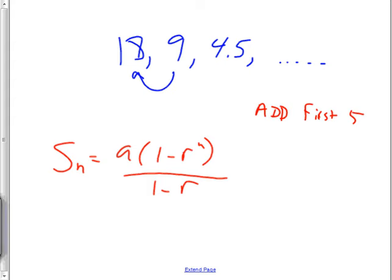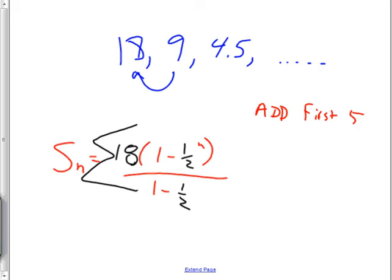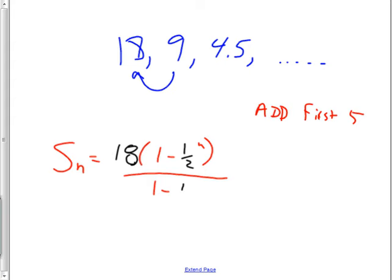For this problem, stick in A sub zero. The test formula just uses A — don't let that throw you, plain A is the same as A sub zero — so put in eighteen. Then one minus R to the N: R is one-half. If you wanted this as a summation, you could write it from one to five. Our N is five, so the expression becomes one minus one-half to the fifth power.